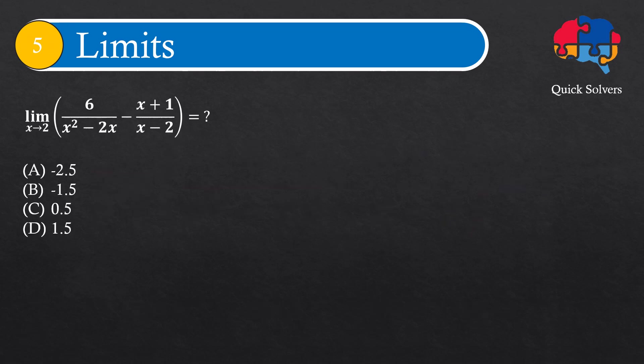Let's see how we can solve this. If I replace x by 2, then for this expression here, I'll get 6 over 0. And for the other expression, I'll get 3 over 0. And we know that this is an indeterminate form. That's why we cannot replace x by 2 at this stage. I need to first try to further simplify this and then replace x by 2.